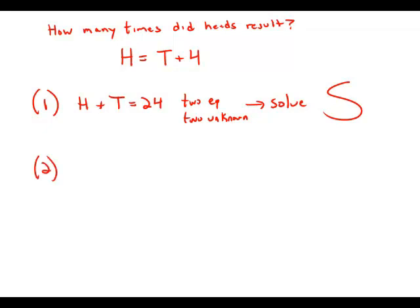Now forget statement number one. Focus purely on statement number two. Statement number two tells us the player received three points each time heads resulted and one point each time tails resulted. So in other words, three times heads plus one times tails equals 52.